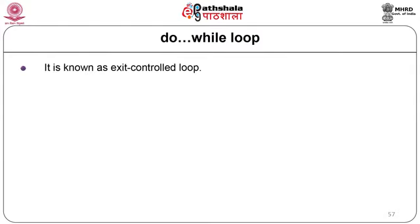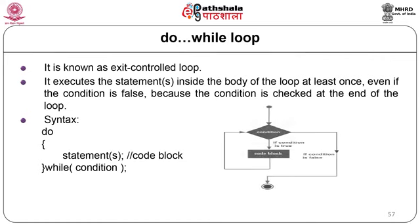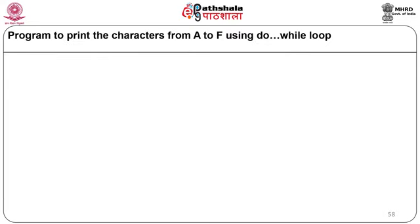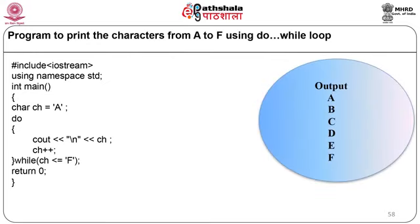The do-while loop is an exit control loop. It executes the statements inside the body at least once, even if the condition is false, because the condition is checked at the end. Syntax: do { statements } while (condition). A program prints characters A to F: char ch = 'A'; do { cout << ch; ch++; } while (ch <= 'F');. Output: A B C D E F, each on a new line.